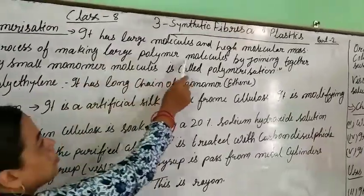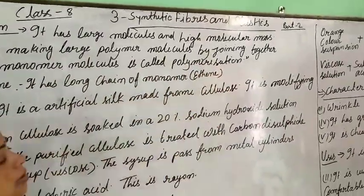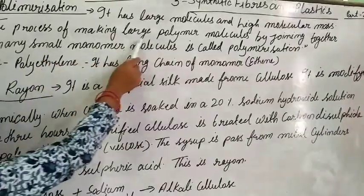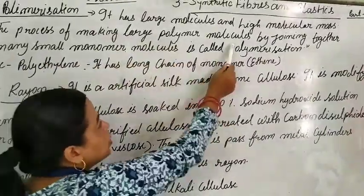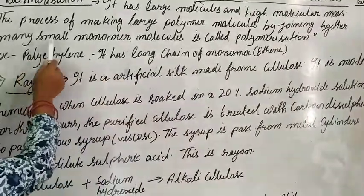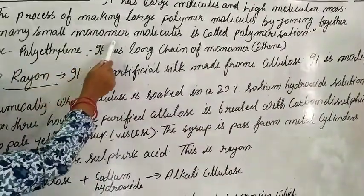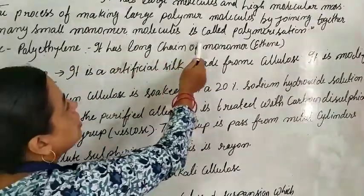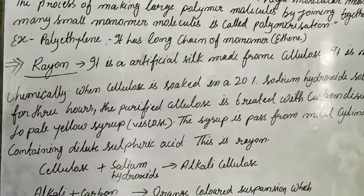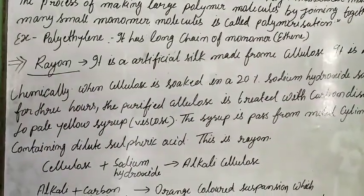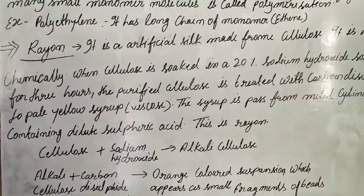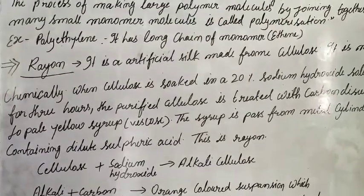It has a large molecule and high molecular mass. The process of making large polymer molecules by joining together many small monomer molecules is called polymerization. It means a long chain is combined together, making molecules from monomers to form polymerization.